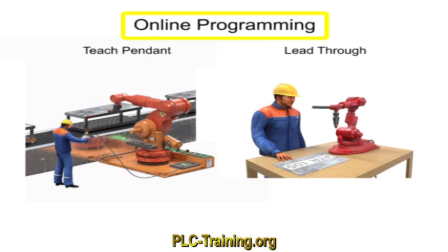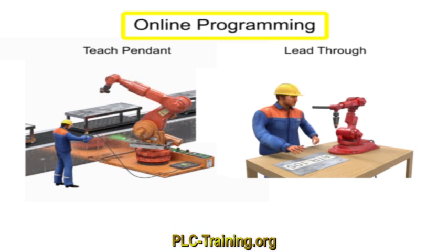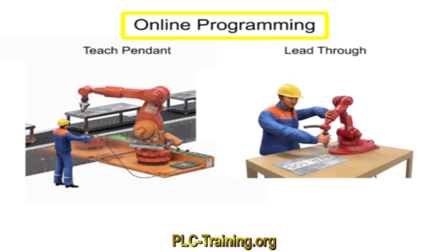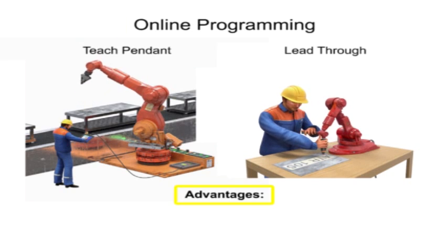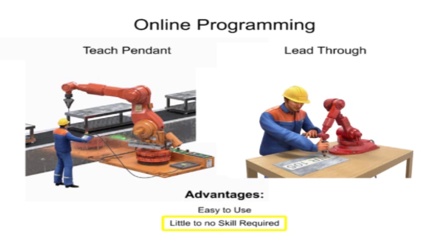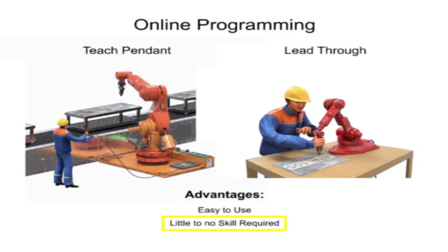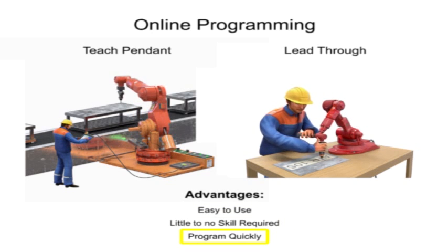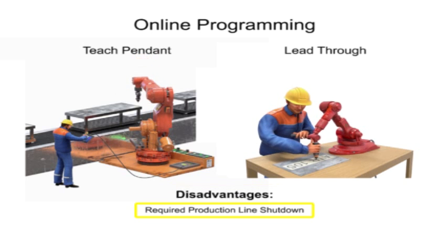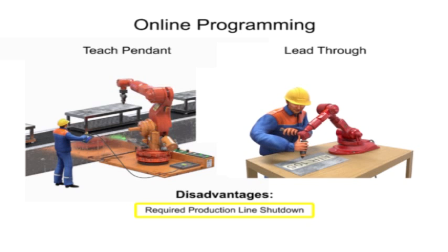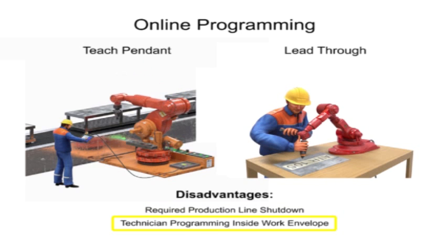Online programs can typically be edited for speed, point error correction, and small modifications once the initial programming is complete. Advantages of online programming include ease of use, little or no programming skills required, and the speed at which a program can be created. The disadvantages of online programming are the requirement to shut down the production line while programming is occurring, and that the technician typically has to be in the work envelope while the robot is operating, which exposes him to greater risk of injury.